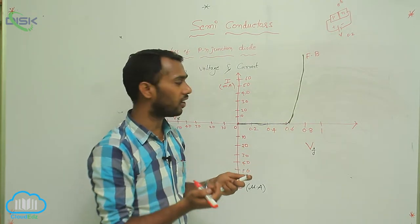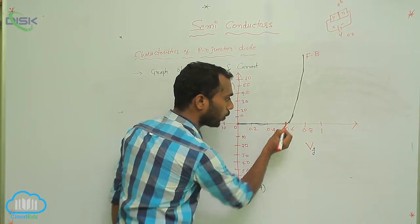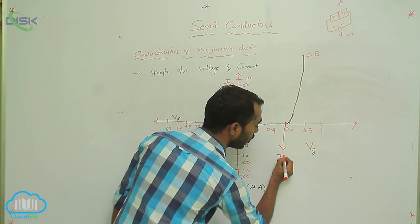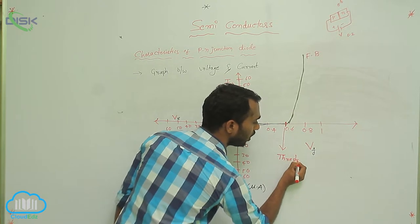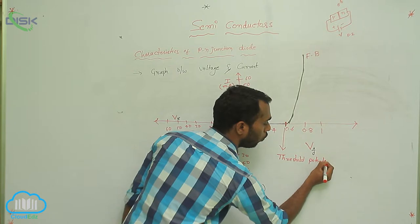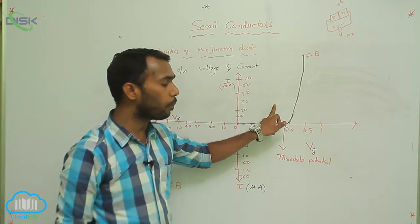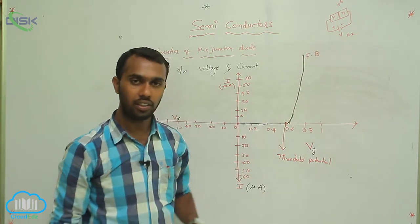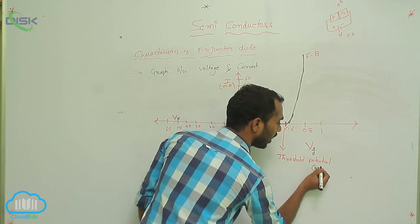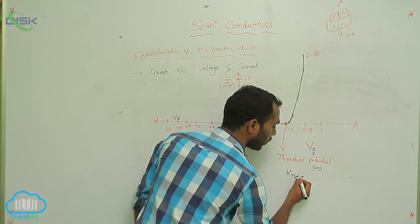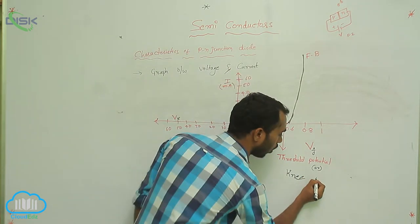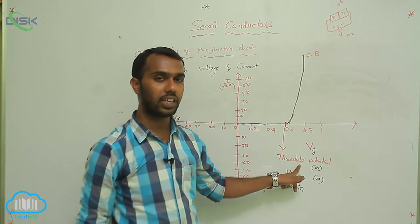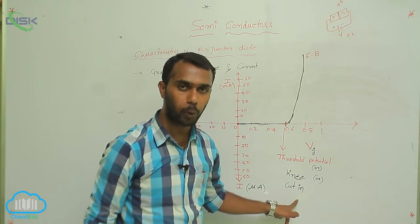The potential at which we get more current is called the threshold potential. Threshold potential also has another name: it is called knee potential. It has one more name as well — that name is cut-in potential. Threshold potential, knee potential, or cut-in potential — all are the same.